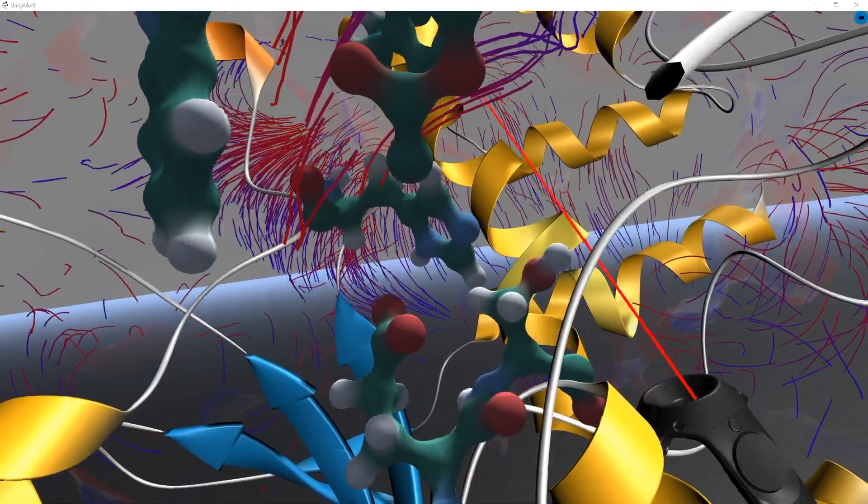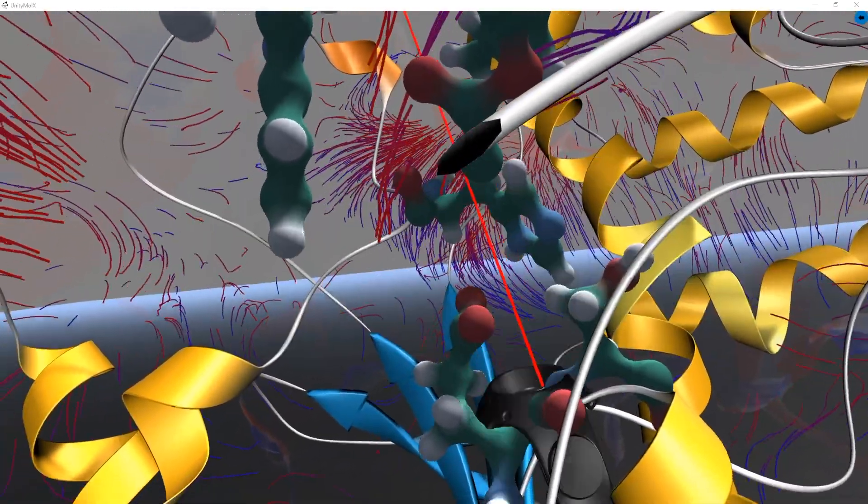Composing the catalytic triad are serine, histidine, and glutamic acid.